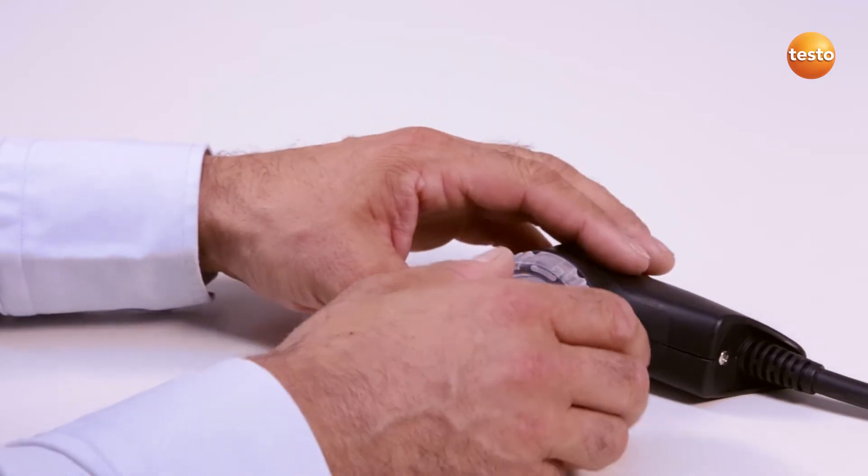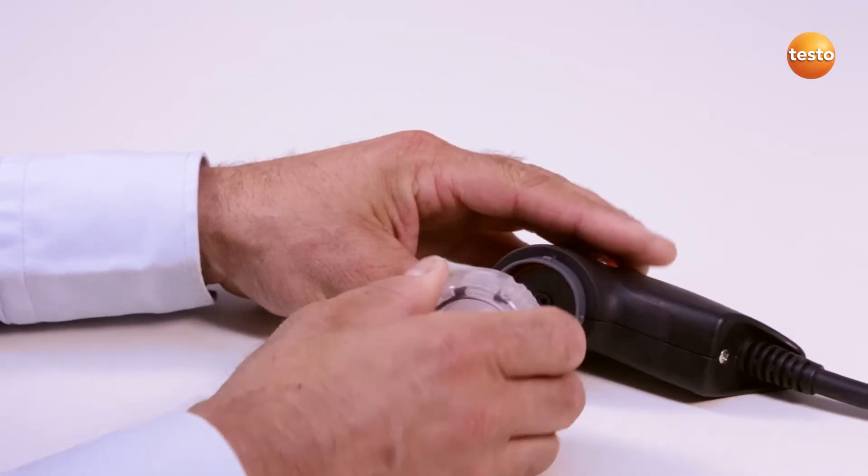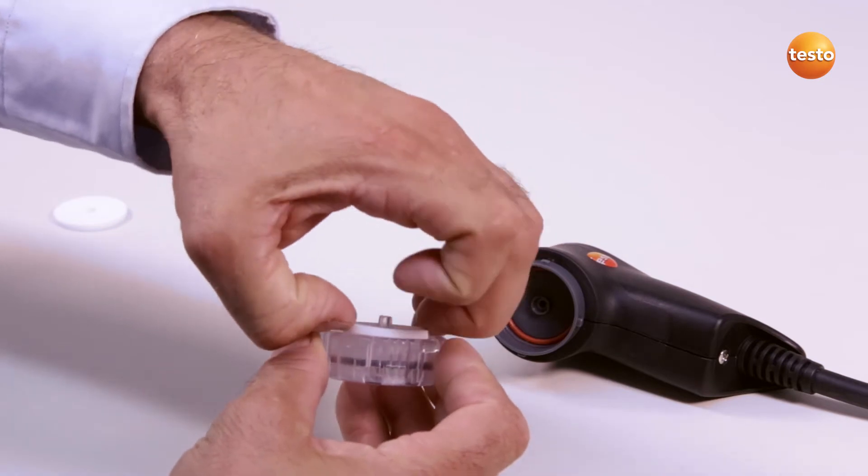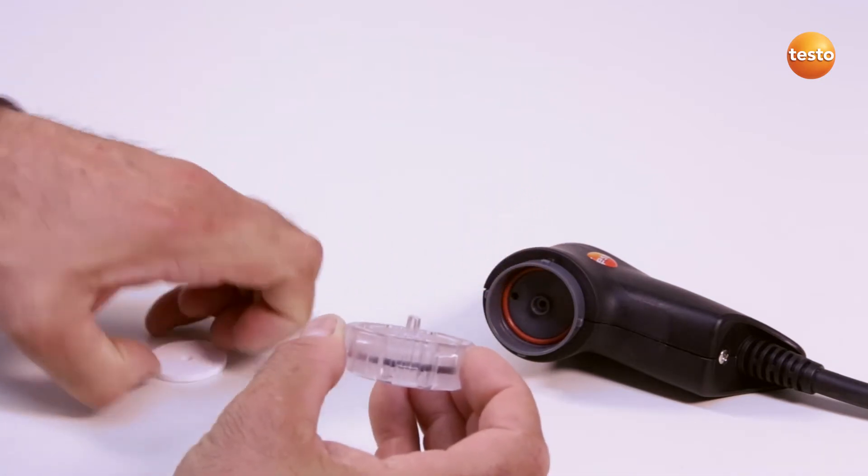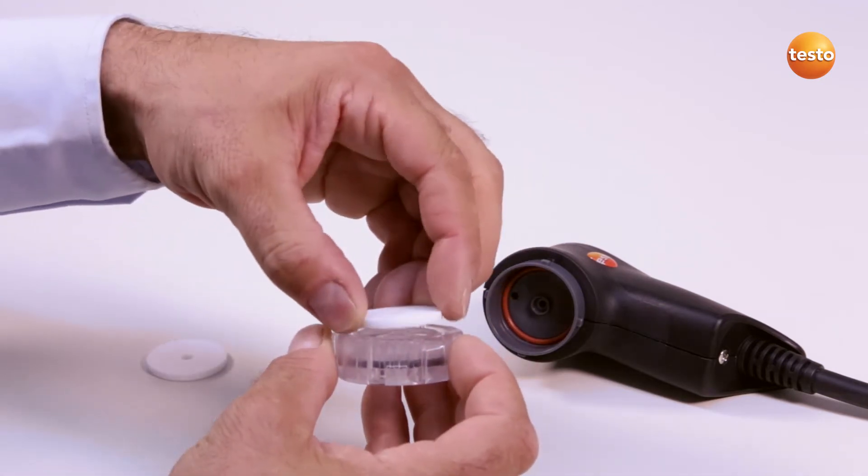In order to exchange the particle filter, I open the filter chamber by turning slightly anti-clockwise. I remove the filter disc and replace it with a new one.